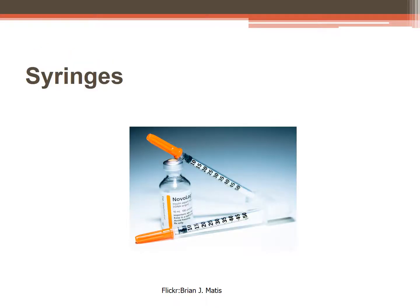First, let's look at a syringe. A syringe has three parts: the tip holds the needle, the barrel is the outside part where the calibrations for measurements are located, and the plunger is the inner portion that fits into the barrel and moves the medication.